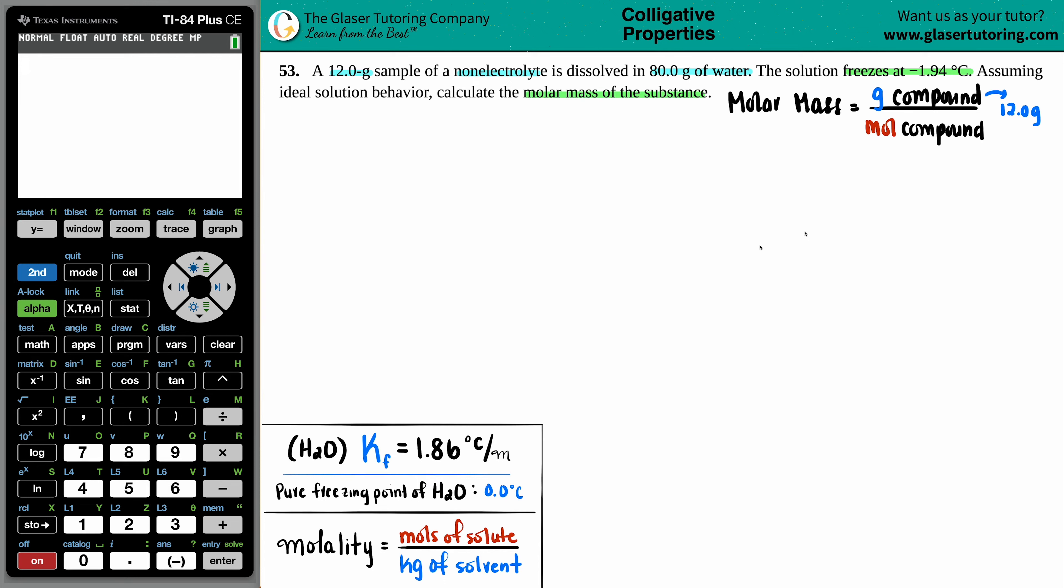But if I'm reading this, it says 12 grams is being dissolved in 80 grams. It freezes at negative 1.94. Didn't give me the moles. That's okay. We can find it out.